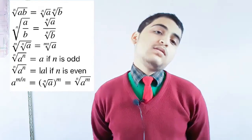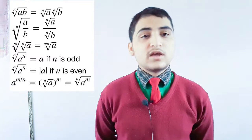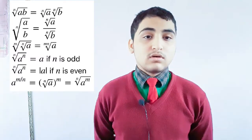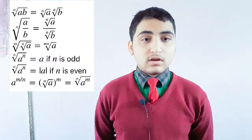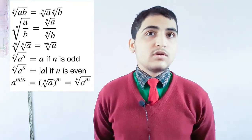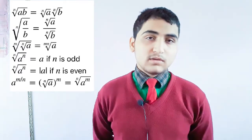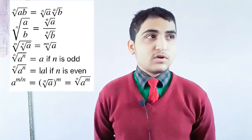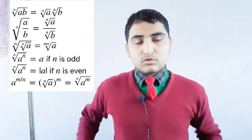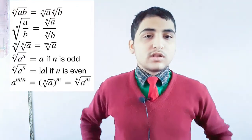Similarly, there is a concept of like surds and unlike surds. If they are like surds, we can add them. If they are unlike surds, we cannot add them. So when there is nth root of a plus nth root of a, we can write it as 2 times nth root of a. But if there is nth root of a plus nth root of b, we cannot add them — we cannot combine them into a single surd; there will be two surds.